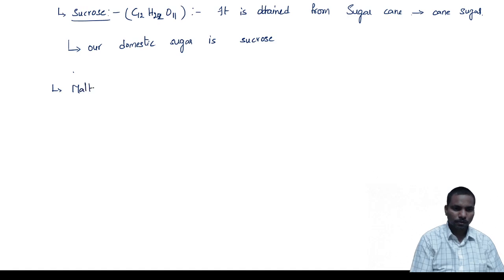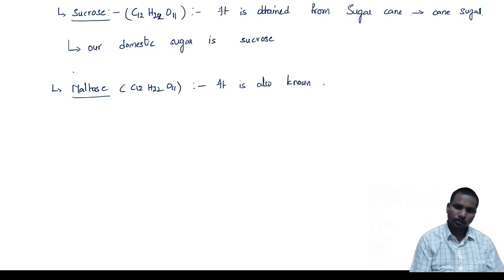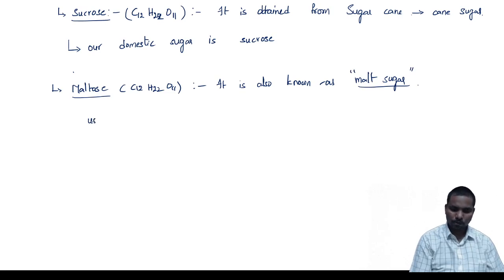Coming to the next one, maltose. Maltose has the same formula as sucrose: C12H22O11. It is also known as malt sugar, and it is used in the production of alcohol.